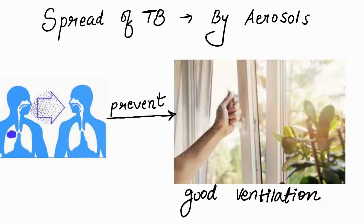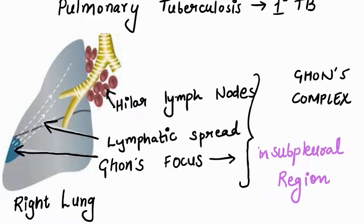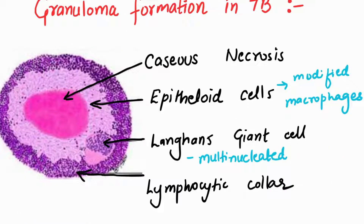The person inhaling those droplets gets infected, which is why good ventilation is so important to prevent TB. Once inhaled, the bacteria go right into the lung, involve the hilar lymph nodes, and form a complex in the subpleural region known as Ghon's complex. This is your primary TB infection. All this while, your immunity is fighting this bacteria, and unable to eliminate it, it makes a wall around the bacteria known as granuloma formation.